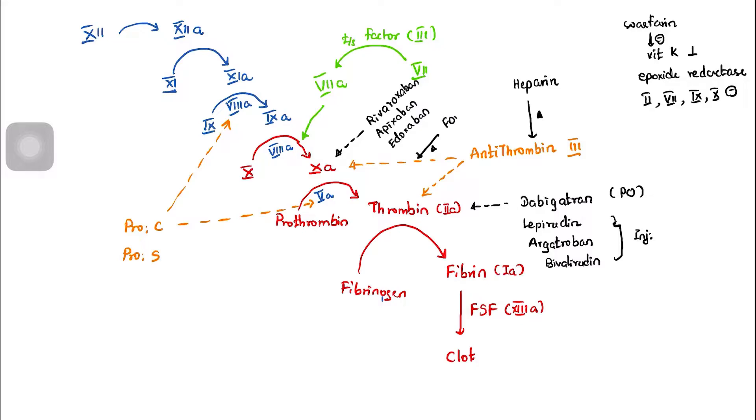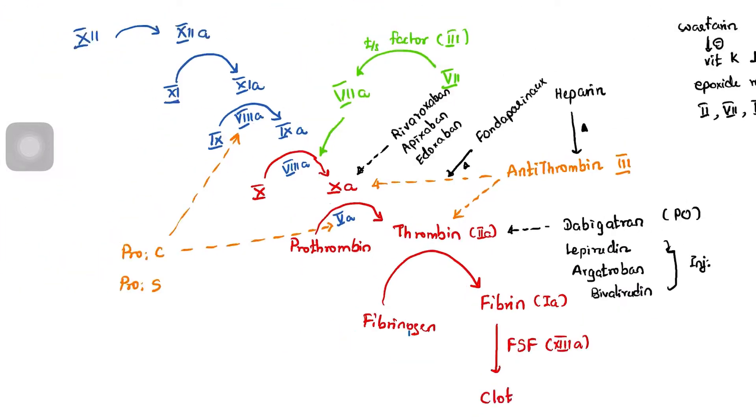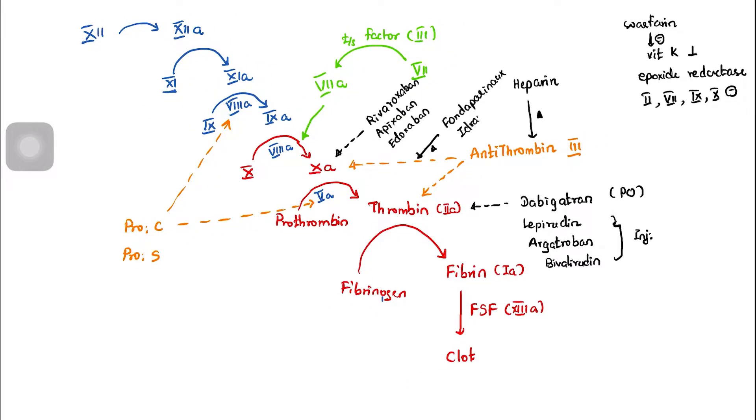Heparin comes in low molecular weight and high molecular weight forms, and the action differs between them. We have solutions for factor 10a inhibition, direct thrombin inhibition, and indirect thrombin inhibition. So we have the mechanism of action of anticoagulants.